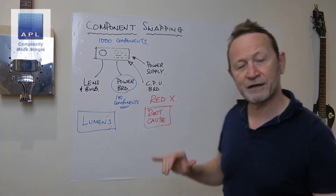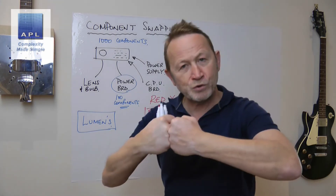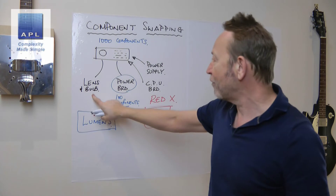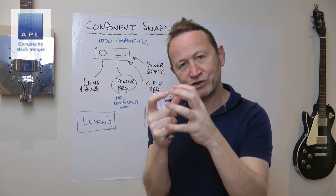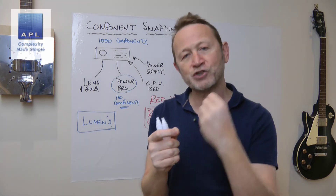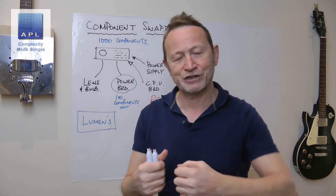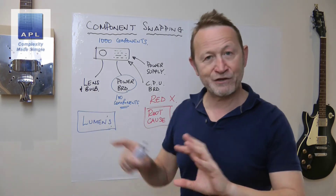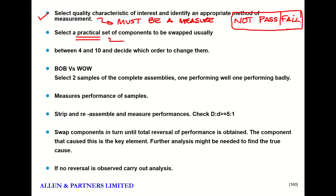Select a measure that's continuous data. Then identify the practical subassemblies to swap. Practical means: if you've glued something together or something's been riveted, that's a one-way fix — we're not going to grind rivets off. If the lens and bulb are fixed together they have to be swapped as an assembly. It's got to be practical — just taking a few screws out, moving the item, screwing it back. Usually they talk between four and ten components to swap.